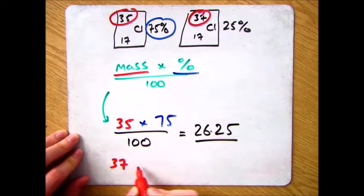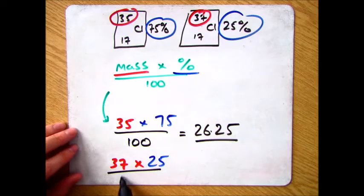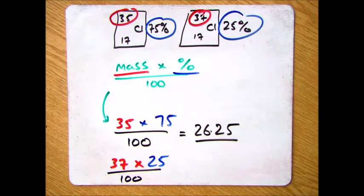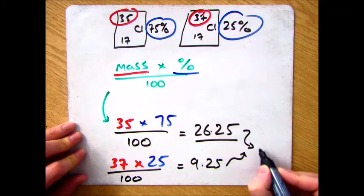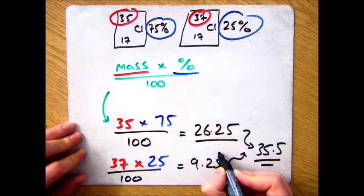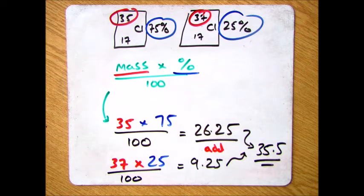Now what you need to do is do the same for all the different isotopes. So in this case 37 by 25 divide that by 100 which gives you 9.25. And then finally all you do is take those numbers and add them together which comes out at 35.5. And that's it.